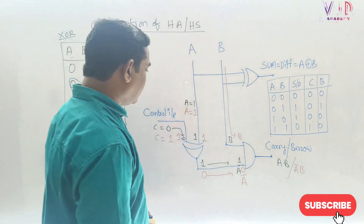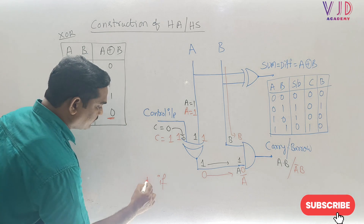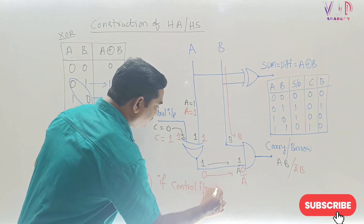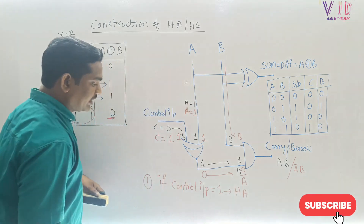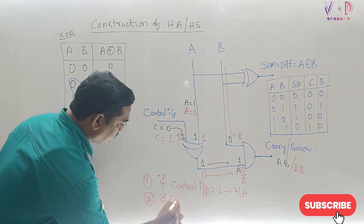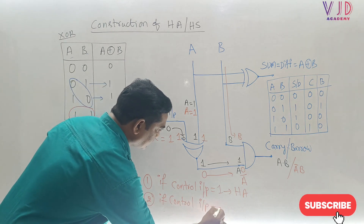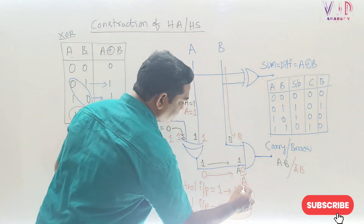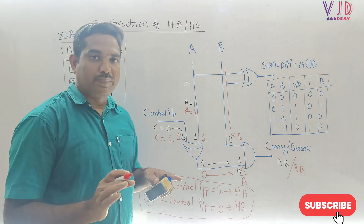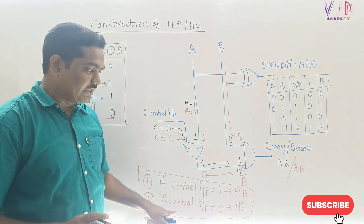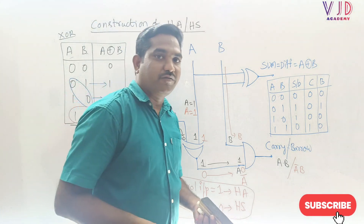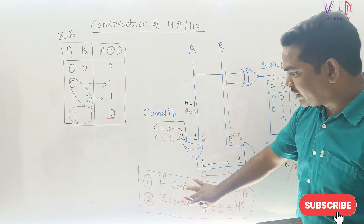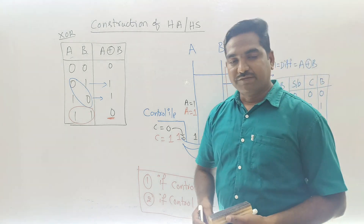So the very important conclusion is: if the control input equals 0, the circuit acts as a half adder; if the control input equals 1, the circuit acts as a half subtractor. This is a very important concept for those preparing for GATE and PSU exams. Paper setters focus on this type of logic — not just the truth tables in isolation. Thanks for watching, please subscribe.